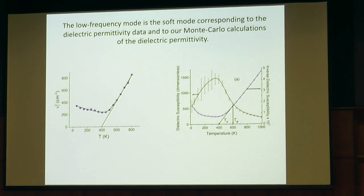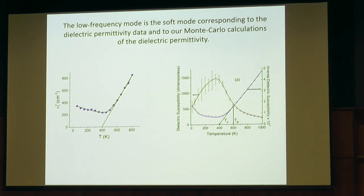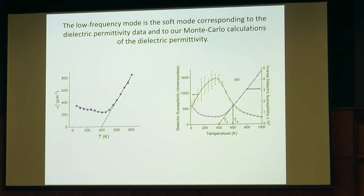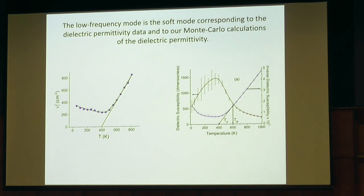Here I showed that the nature of ν₁ is that it is the mode which defines dielectric permittivity, because ν₁ squared — the extrapolation of the high-temperature part — is the same as the extrapolation of inverse dielectric permittivity. This supports the interpretation that this is the soft mode.